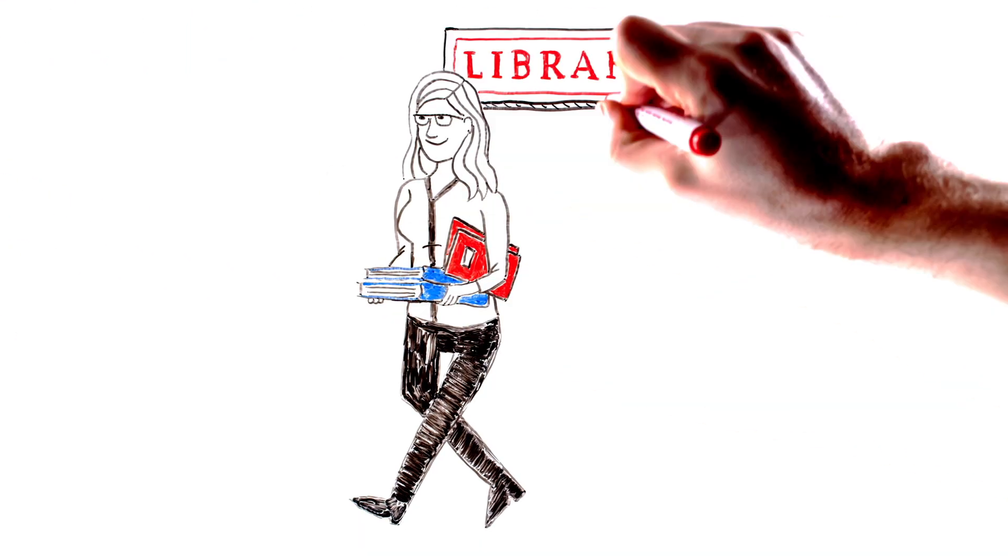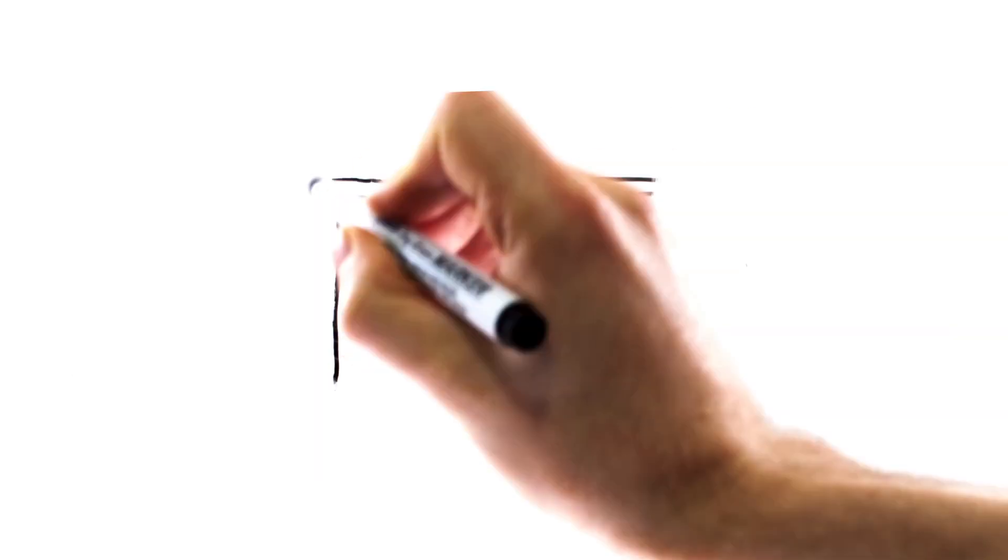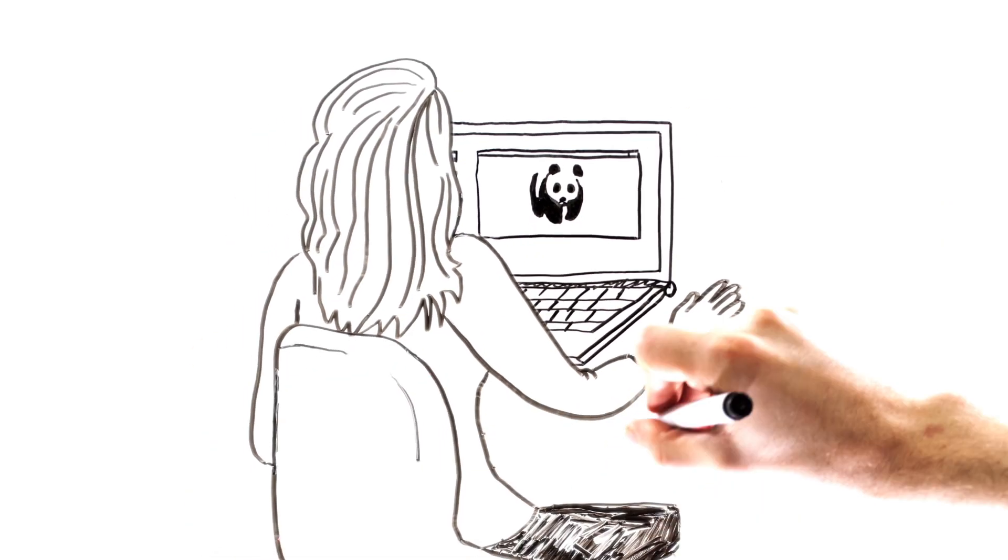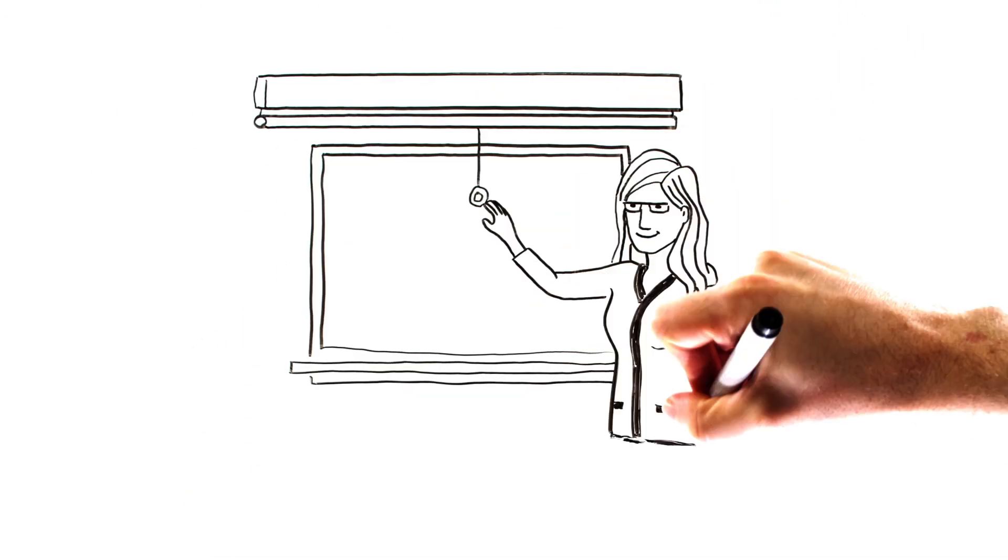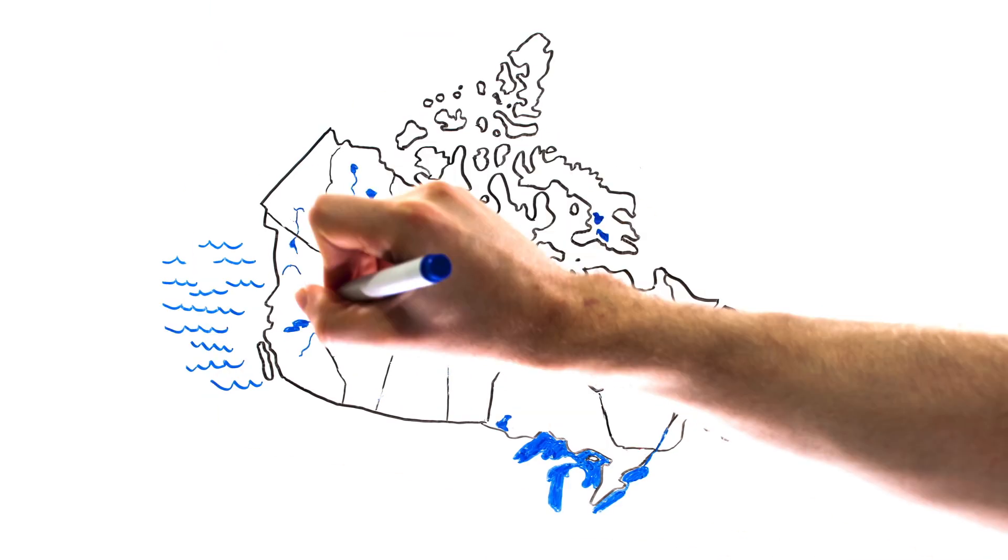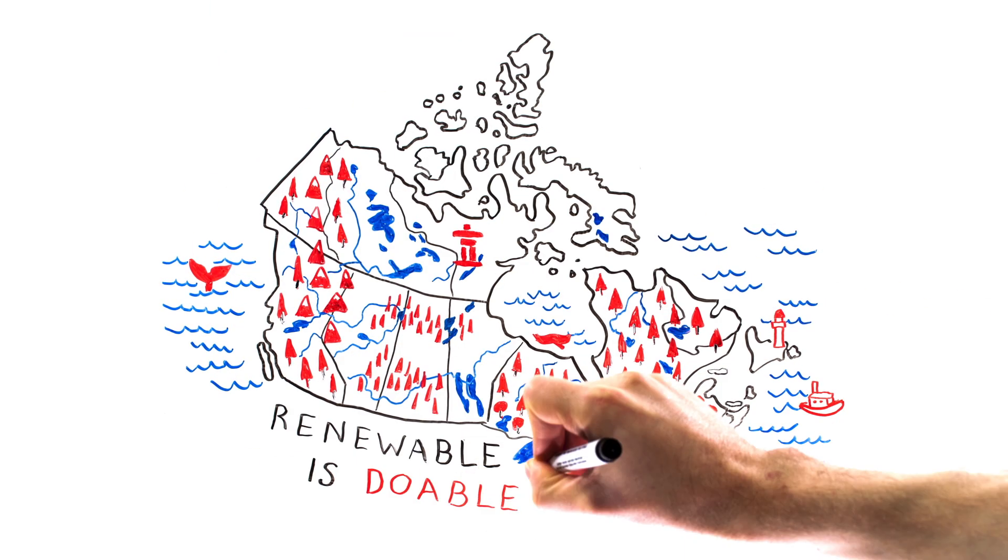So here at the University of Waterloo, we're working with WWF to take data from many different sources, translate it into the same units, and then put it all together into one big map showing that renewable is doable.